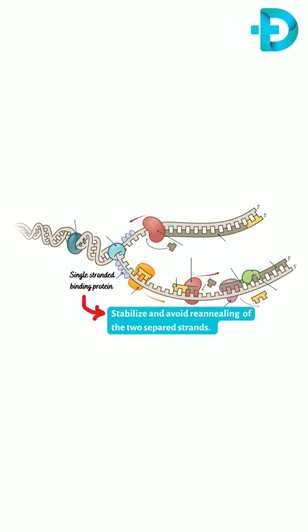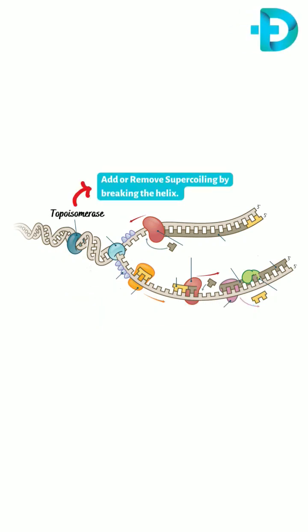Single-stranded binding protein stabilizes and avoids reannealing of the two separated strands. Topoisomerase adds or removes supercoiling by breaking the helix.